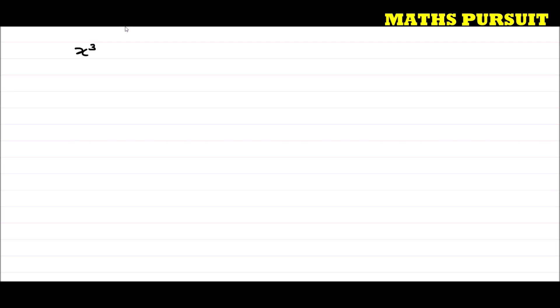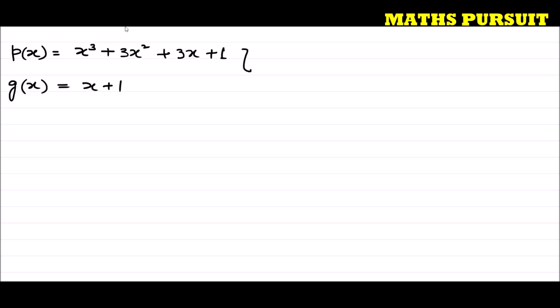The question has given us the polynomial x³ + 3x² + 3x + 1. Let this polynomial be P(x). The question is asking us to find the remainder when P(x) is divided by x + 1. Let this second polynomial be G(x). We need to find the remainder when P(x) is divided by G(x). Let us find it using the long division method.